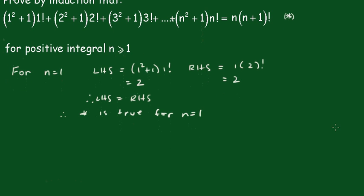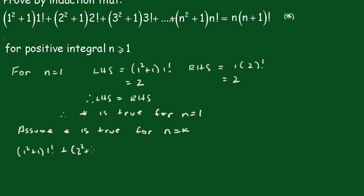Now we assume the statement is true for n equals k. So replacing n with k: 1 squared plus 1 times factorial 1, plus 2 squared plus 1 times factorial 2, plus all the way along to k squared plus 1 times factorial k, equals k times (k+1) factorial. That is our assumption line.